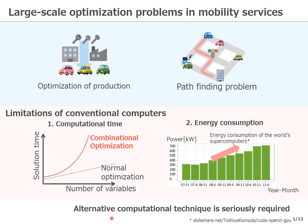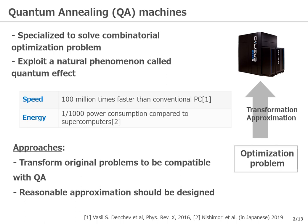Therefore, an alternative computational technique to the conventional von Neumann computer is seriously required. In this line, we started a project to research quantum annealing machines as one of such new computing platforms. Quantum annealing is a computational machine specialized to a certain class of combinatorial problems, and it exploits a quantum natural phenomenon called quantum fluctuation, which essentially enables simultaneous solution searches.